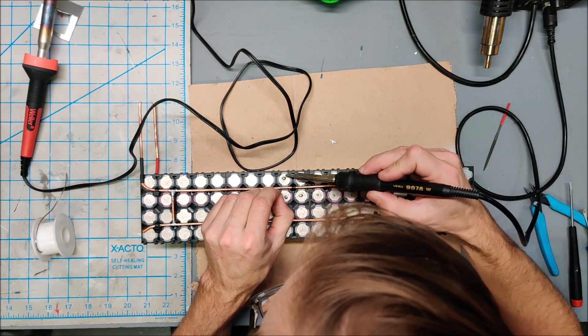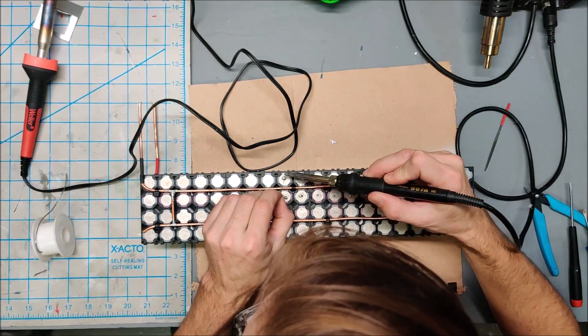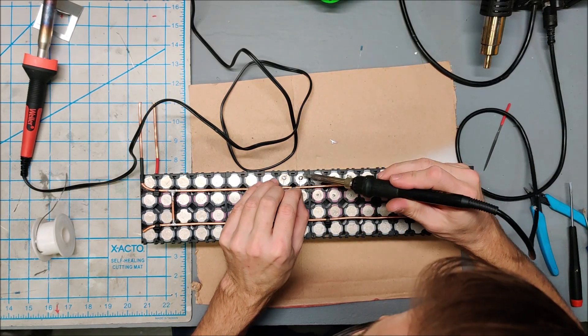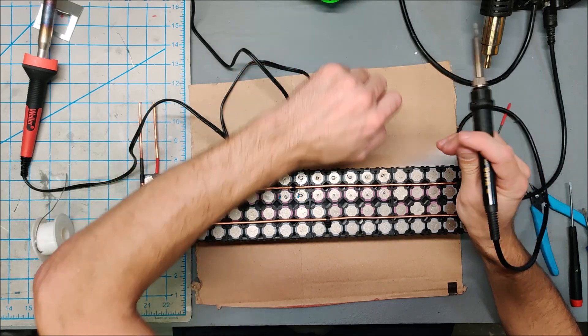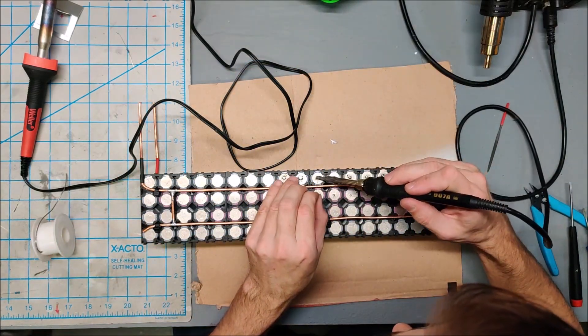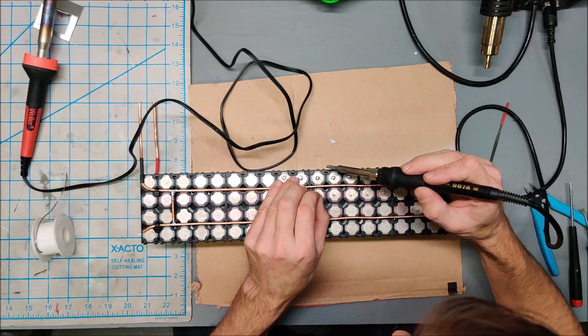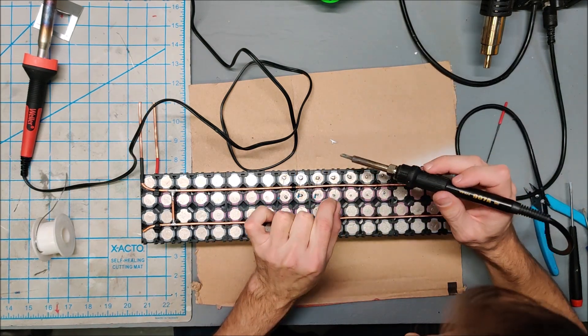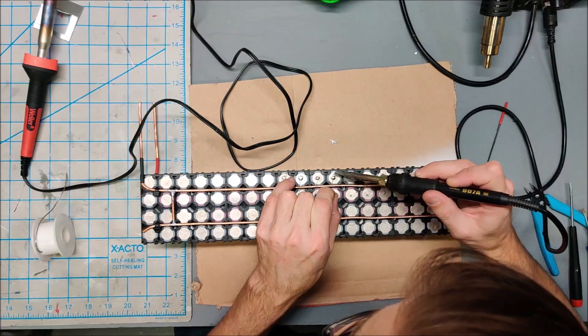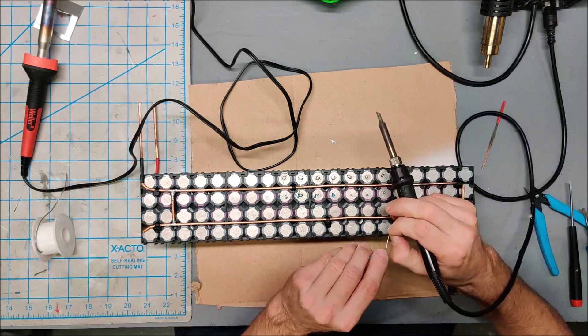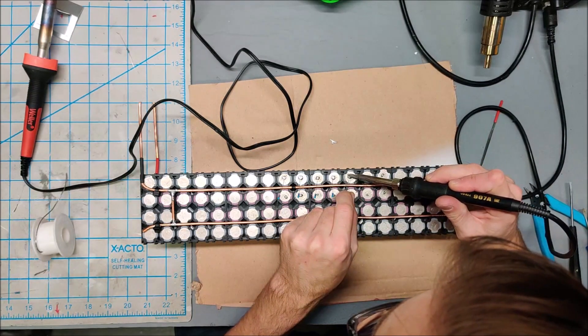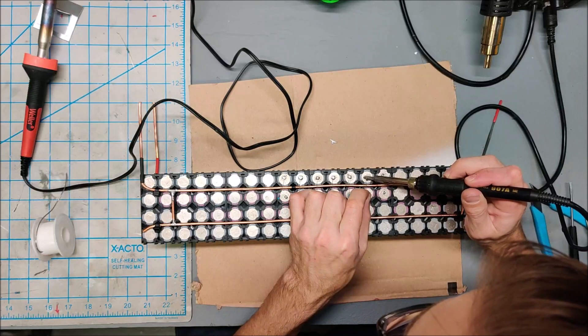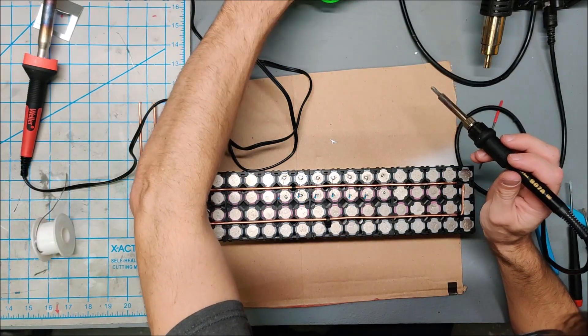So we take the resistor, put it on top of the solder, and we reflow the solder on top. Let the solder cool a little bit. It's very easy to accidentally pull the resistor leg out or end up with a cold joint. You want your solder to flow and you want the resistor to be in the solder good.